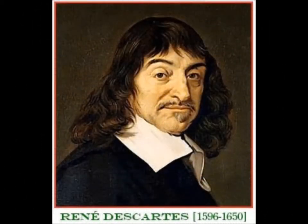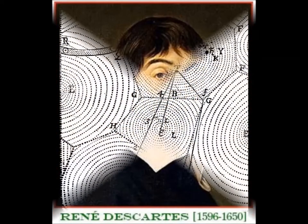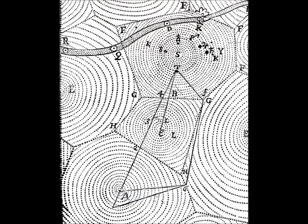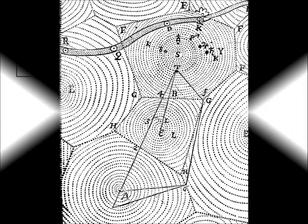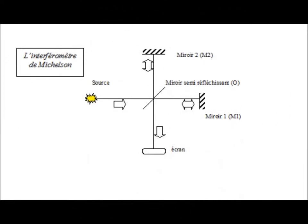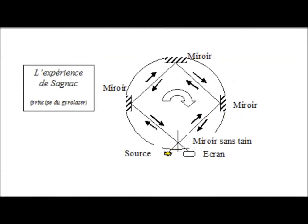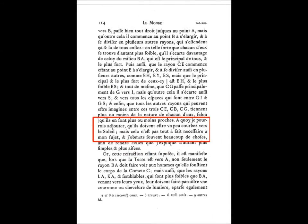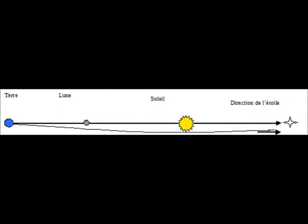So Descartes was right. Gravitation and light are carried by the same medium. This is the famous theory of vortices. Before going into the detail of this theory, it should be recalled that Descartes theory explains the Michelson and Sagnac experiments in a perfectly obvious way. Most remarkable is that Descartes had foreseen the deviation of light by the Sun.